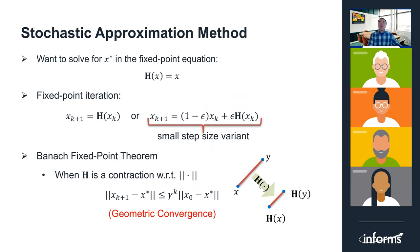How do we solve such an equation? The natural way is to perform a fixed-point iteration, or its small step-size variant. Note that to carry out such iteration, we need an oracle such that for every x, it returns the exact value of H(x). Then an intermediate question is: when does the fixed-point iteration converge? By the Banach fixed-point theorem, when the operator H is a contraction with respect to some norm, we have geometric convergence. That is, the distance between the iterate x_k and the target solution x* converges exponentially fast as the number of iterations increases.